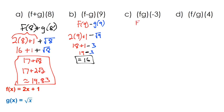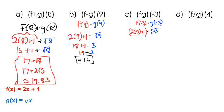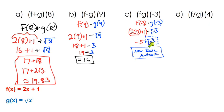For multiplication, we do f of negative 3 times g of negative 3. Substituting into f of x gives 2 times negative 3 plus 1, multiplied by the square root of negative 3. We get negative 6 plus 1, but the square root of negative 3 is a non-real answer — our function is undefined at that value. So the answer is non-real, or undefined, because the function is not defined when x is negative 3.